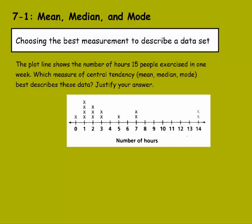So here we have to choose the best measurement to describe a data set. It says the plot line shows the number of hours 15 people exercised in one week. Which measure of central tendency, mean, median, or mode, best describes these data? Justify your answer. Each one of these, mean, median, and mode, works best in specific examples. The mean works really well when the number of values are spread out really evenly. The median, on the other hand, works really well when there are outliers, meaning that there's data values that are very far apart from the other data values. The mode then works very well if one number is very dominant.